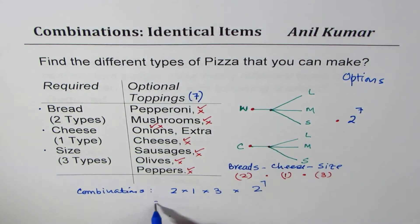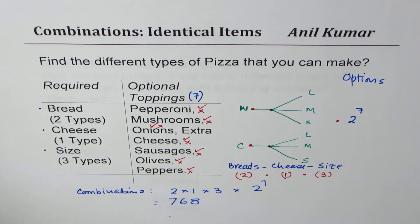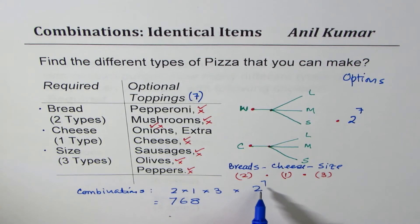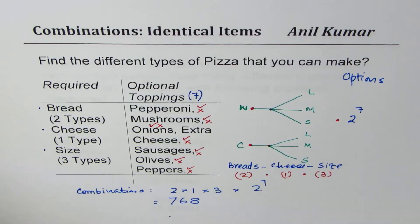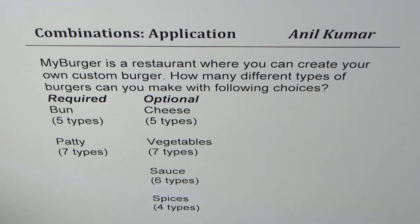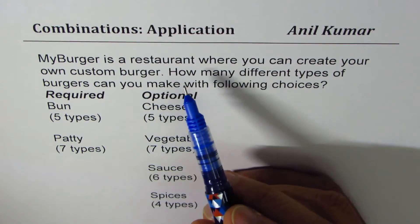That is two times three times one times two to the power of seven, which equals 768. So 768 is the answer for the given question. I hope you understood the method — optional items should be treated as two to the power of n, where n is the number of optional items.